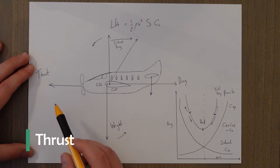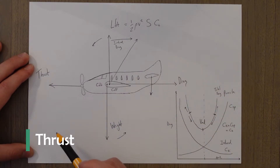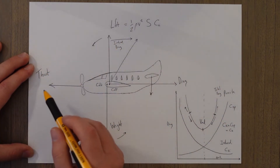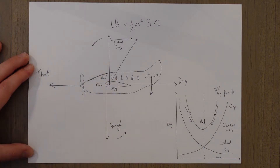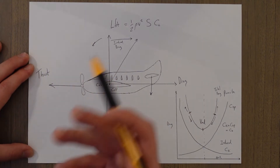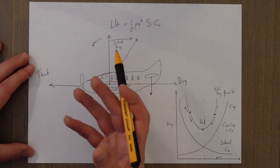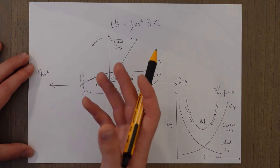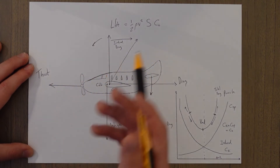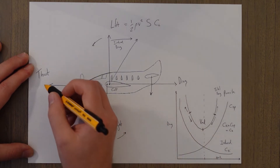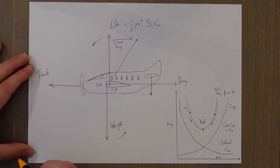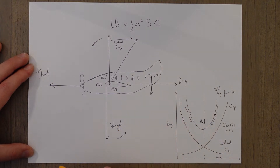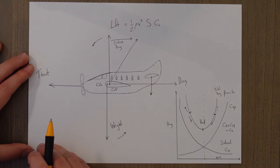Thrust is needed basically to overcome the drag of the plane. Performance revolves a lot around how much thrust is needed for certain phases of flight and what factors to take into effect, so it's kind of worth giving a whole video to. But for now, just know that thrust has to equal drag for us to be in level flight, and lift has to equal weight for us to be in steady level flight as well.